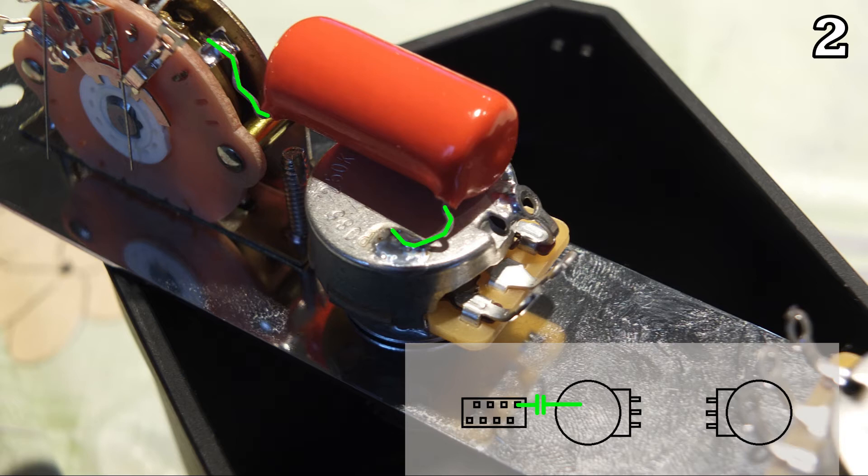Solder one side of the capacitor to the far right pin on the top row of the three-way switch and the other side of the capacitor to the housing of the volume pot.